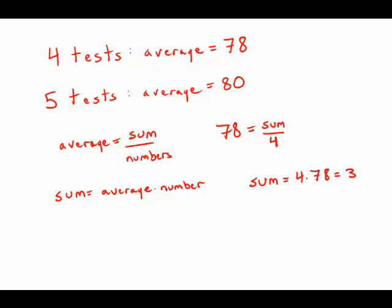It turns out that that's 312. If we want the five tests to have an average of 80, well that means that their sum, the sum of those five tests, would have to be five times 80. Well, that's 400.